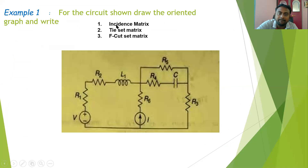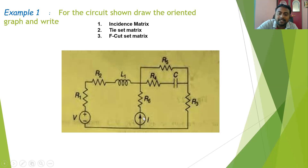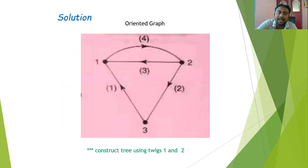This is our first problem. For the given circuit we have to write three matrices: the incident matrix, the tie-set matrix, and the cut-set matrix. Before drawing the graph, we identify three nodes — node one, node two, and the reference node (third). There are two active sources with no internal resistance. We replace the voltage source with a short circuit and the current source with an open circuit, leaving four branches and three nodes in the graph.